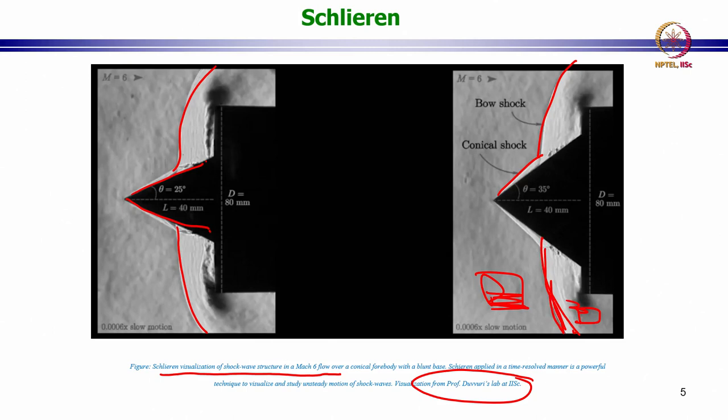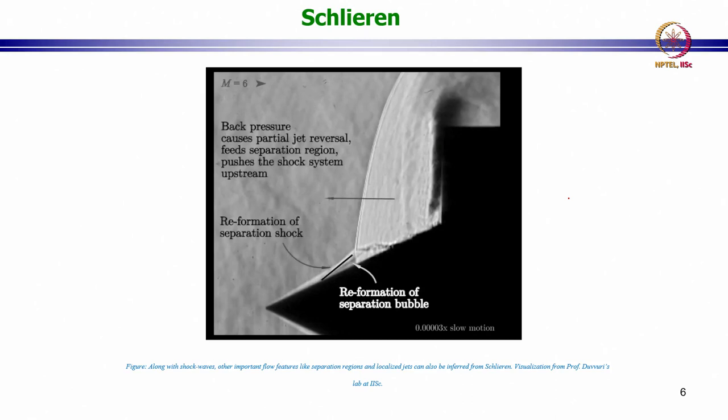What is not what you do not get is data regarding the velocity field. These are not quantitative in the same way that particle image velocimetry is, but you can use data from this to visualize how the shock wave changes. This is just to illustrate, for example, what you can visualize. Important flow features like separation regions and localized jets can be inferred. Again, this image comes from Professor Dhuvuri Subramaniam's lab at IISc.